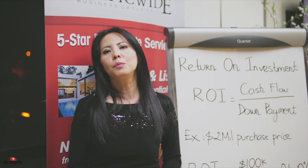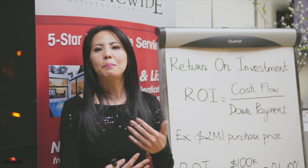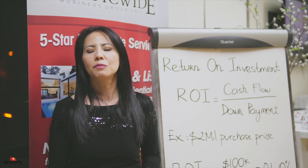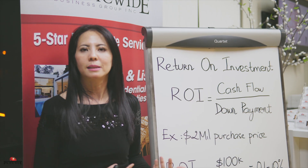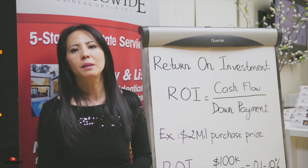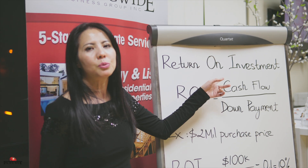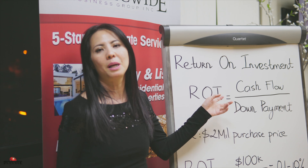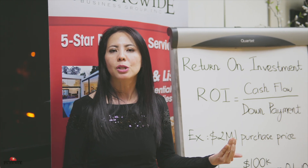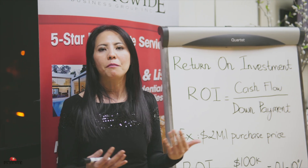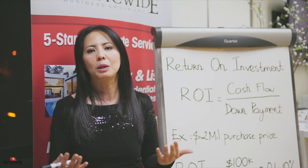Let's do another example. If you get $200,000 cash flow a year instead of $100,000, with the same $1 million down payment, plugging into the formula: $200,000 cash flow divided by $1 million down payment equals 20%. For 20% Return on Investment, you will get your down payment back in 5 years, because if you get $200,000 a year, 5 years later you are collecting $1 million.